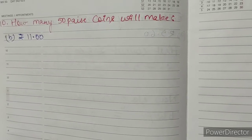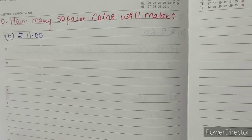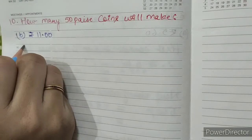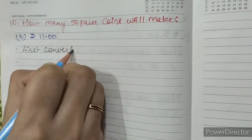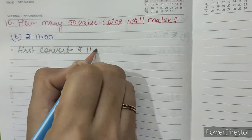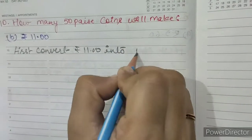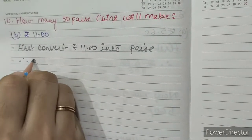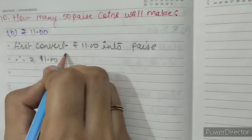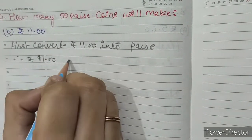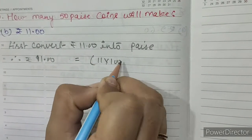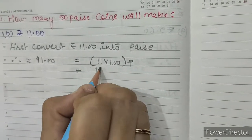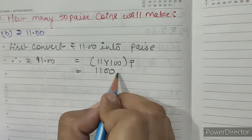Question number 10: How many 50 paise coins will make Rupees 11? First, convert Rupees 11 into paise. Therefore, Rupees 11 equals 11 into 100, which is 1100 paise.